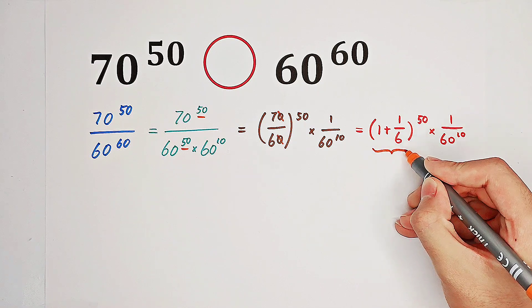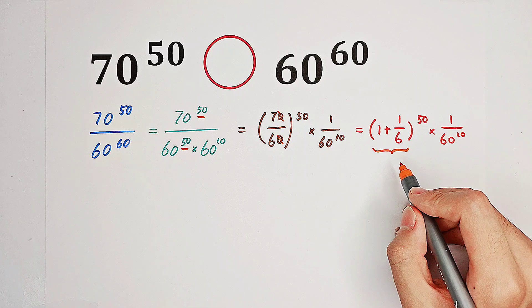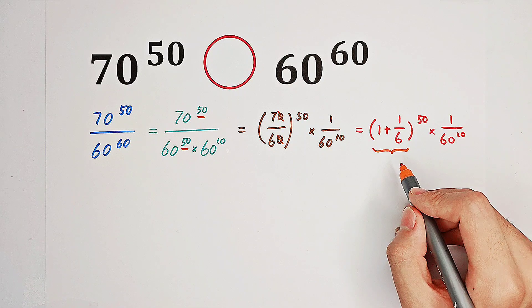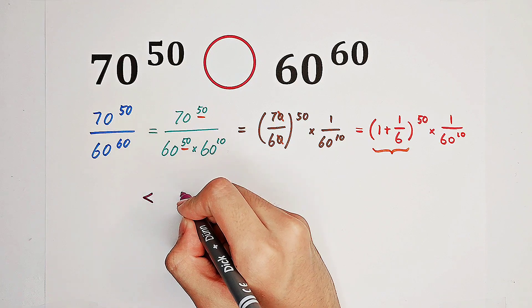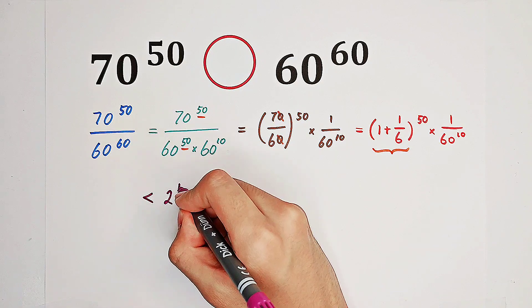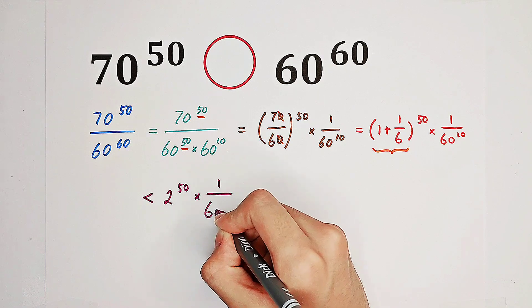Let's have a look at the base. It is certainly less than 2. This whole thing is less than 2 to the power of 50 times 1 over 60 to the power of 10.